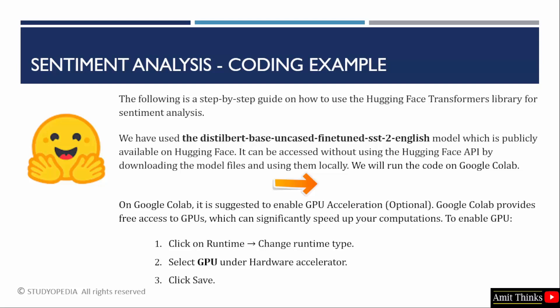Now let us see the coding example. In this, we will use a public model, so we won't be creating an access token because for public models, as I already mentioned, we don't need it. We will run the code on Google Colab. For efficiency, we can also change the runtime on Google Colab, and I will show you that with the example.